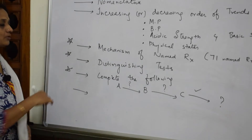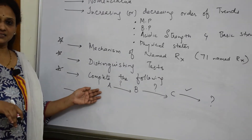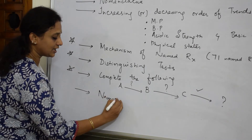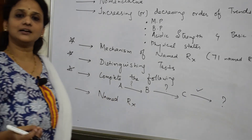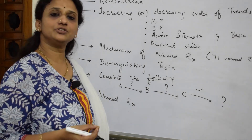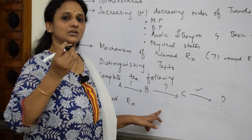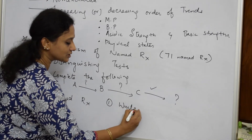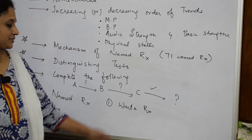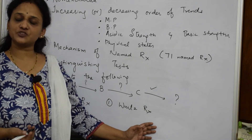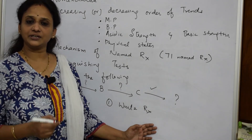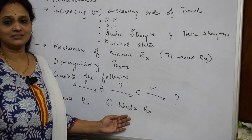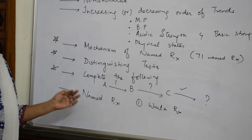After completing reactions, there is another important slot — name reactions asked directly. For example, if they ask about Wurtz reaction, you start with the definition, write the reaction, and name the reactants and products. This is a straightforward question that is easy to practice.